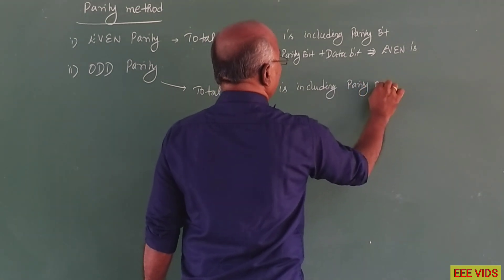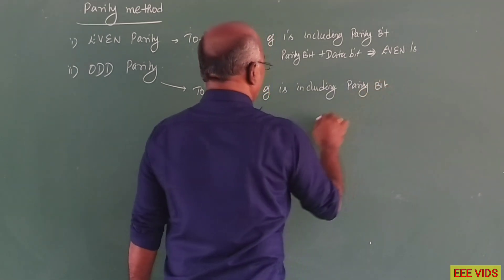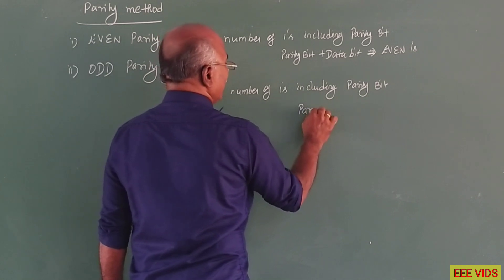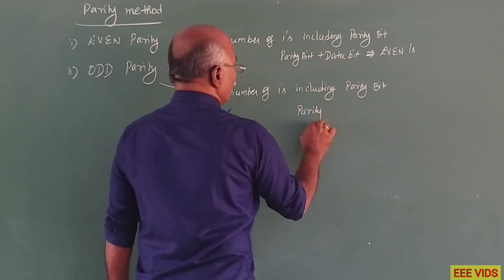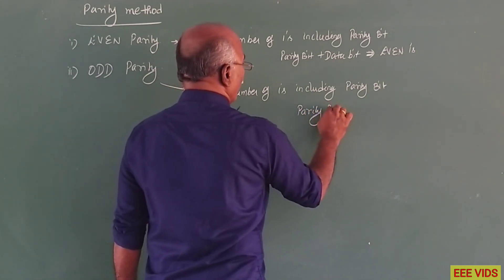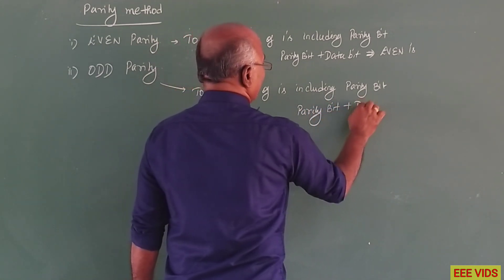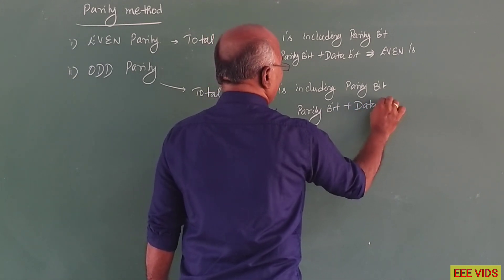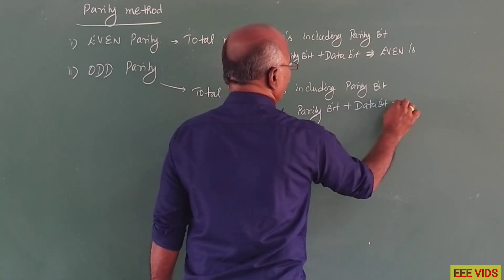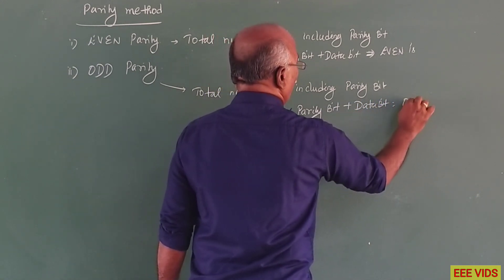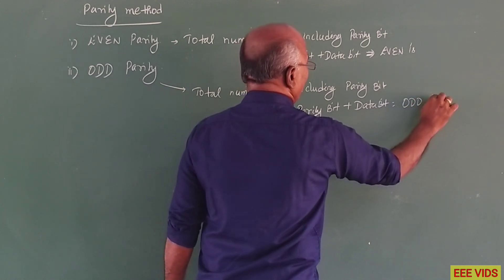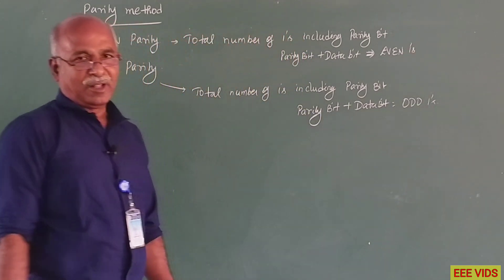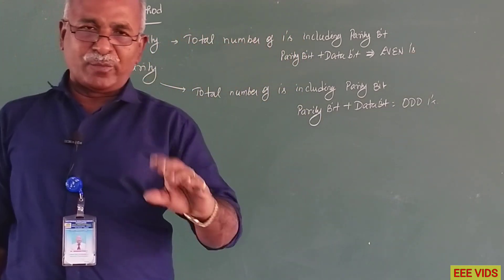In the odd parity bit method, the total number of ones including the parity bit must be an odd number. The parity bit and data bits are fixed so that the total number of ones is an odd number.